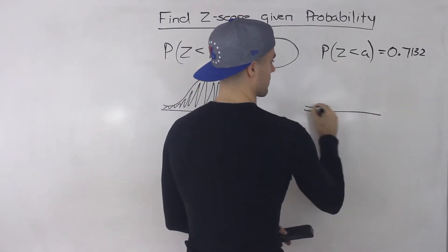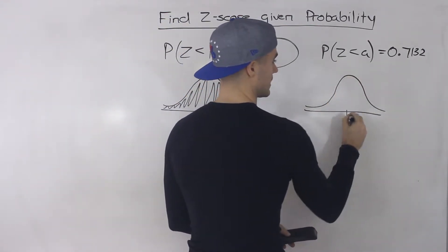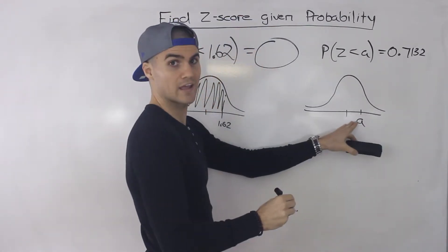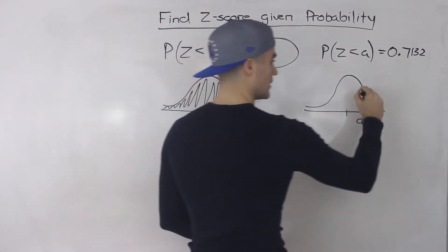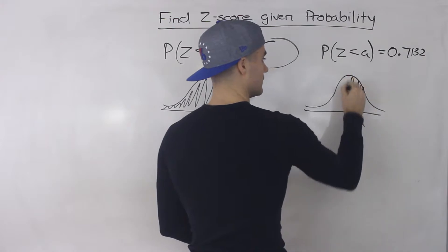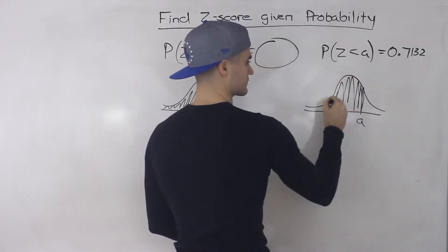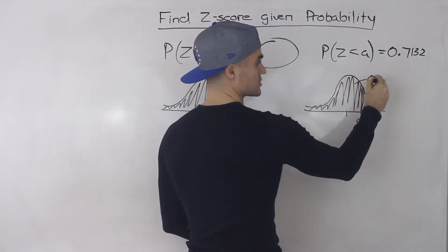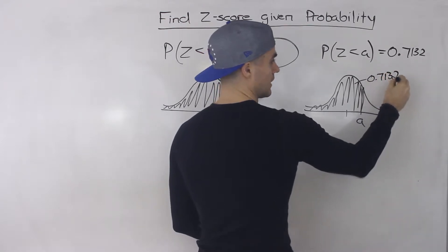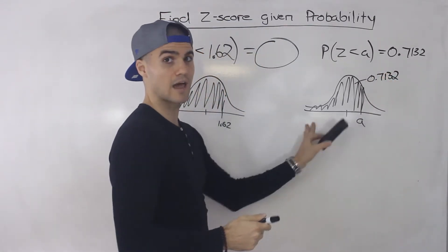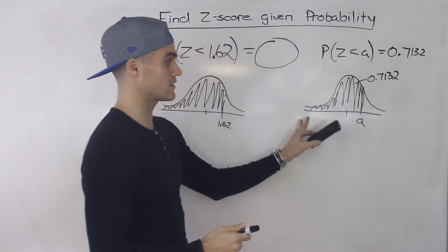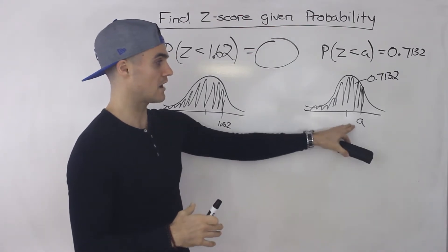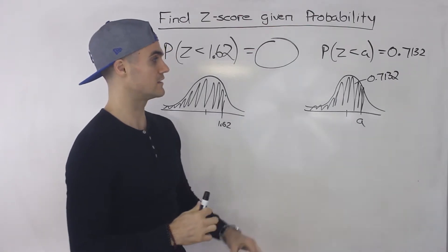So what's going to happen is we're looking for that A value — a certain Z-score — while we're given this area, this probability which is 0.7132. And it doesn't necessarily have to be to the left of A; it could be to the right of A. I'm going to show you in different scenarios how to find that Z-score.